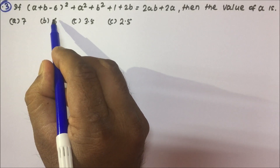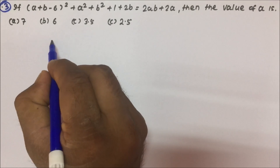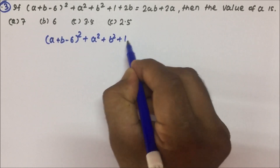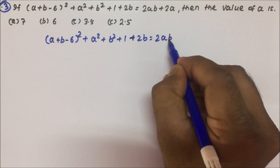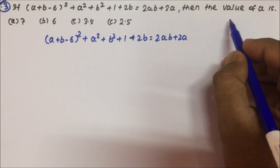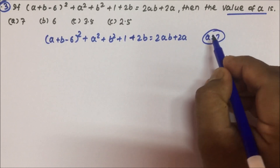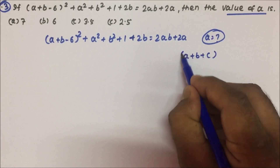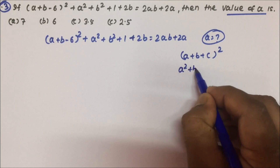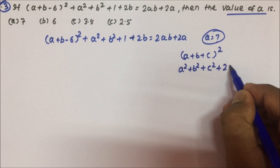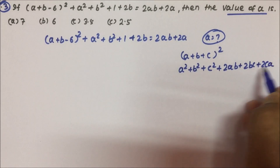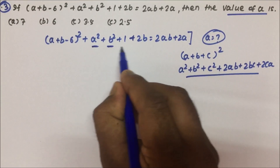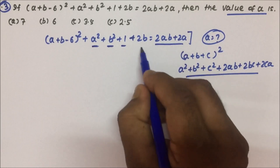So in question 3: (a + b − 6)² + a² + b² + 1 + 2b = 2ab + 2a. We need to calculate the value of a. There is one identity we have already learned: (a + b + c)² = a² + b² + c² + 2ab + 2bc + 2ca. We need to convert this equation into that form. Here, a² + b² + 1 is nothing but a² + b² + c² where c = 1.